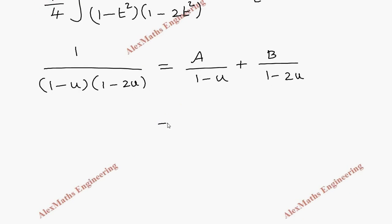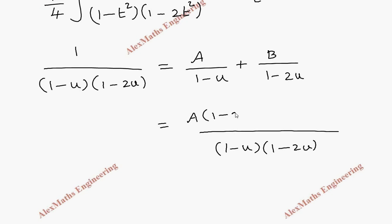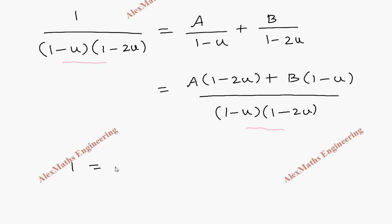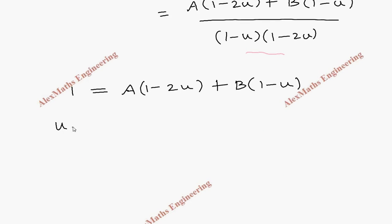Taking LCM as (1 - u)(1 - 2u), we get: A·(1 - 2u) + B·(1 - u). Since both sides have the same denominator, we equate the numerators: 1 = A·(1 - 2u) + B·(1 - u). Taking u = 1: 1 = A·(1 - 2) = A·(-1), so the value of A is -1.